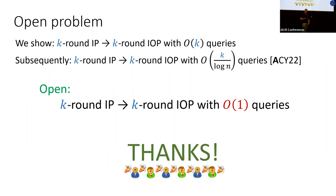Question from audience: regarding the commit-and-prove SNARKs application, how do those parameters compare with other commit-and-prove SNARKs? Answer: other commit-and-prove SNARKs are not in the random oracle model, so they rely on specific hardness assumptions. Our construction uses only the random oracle model.